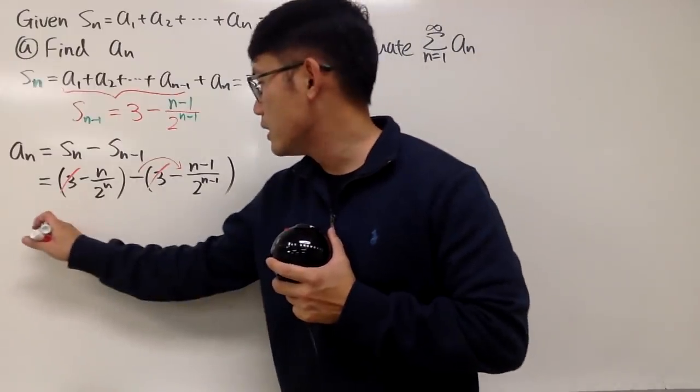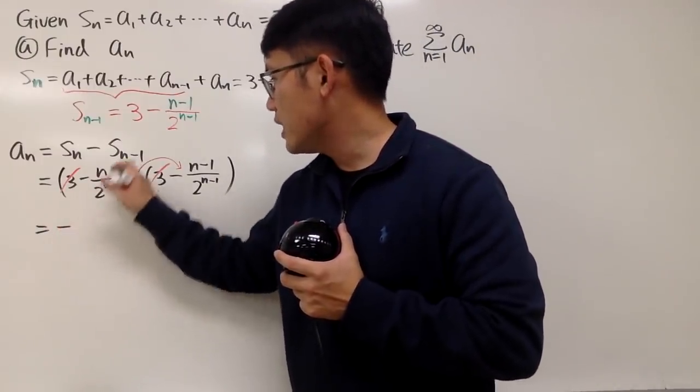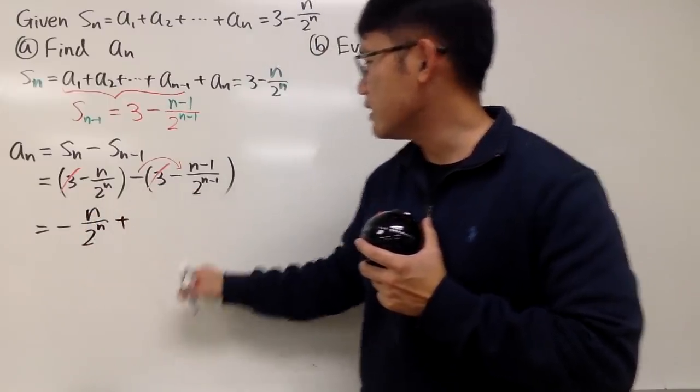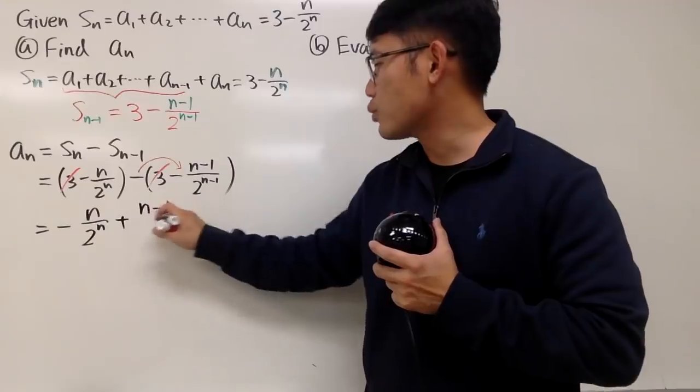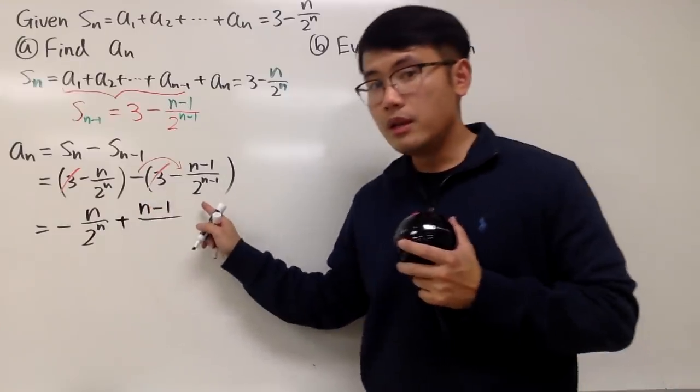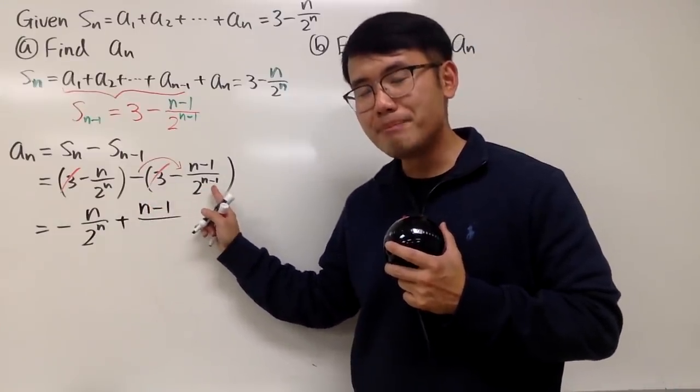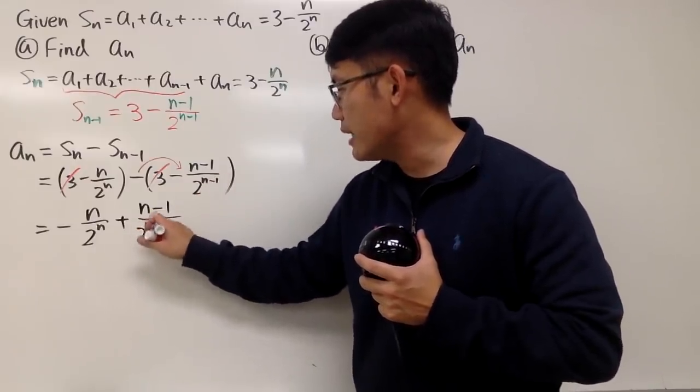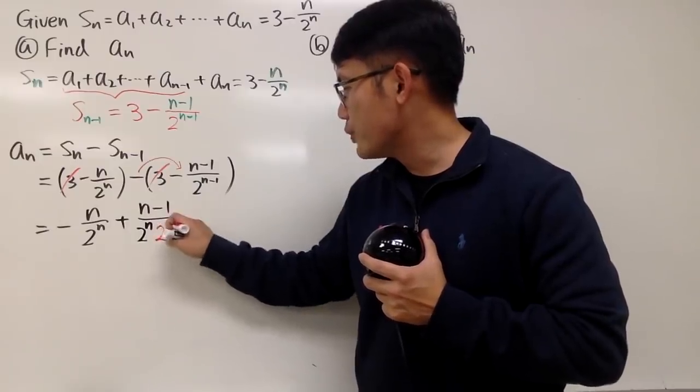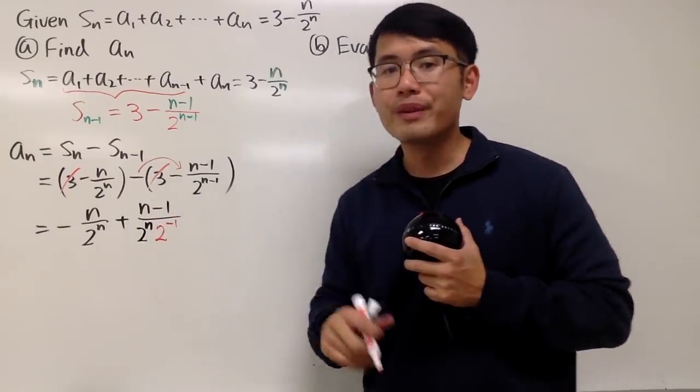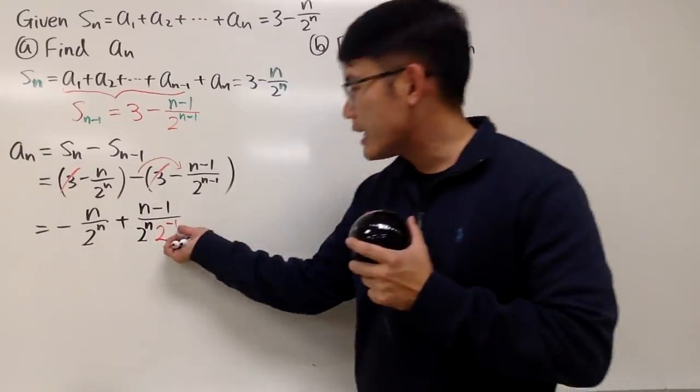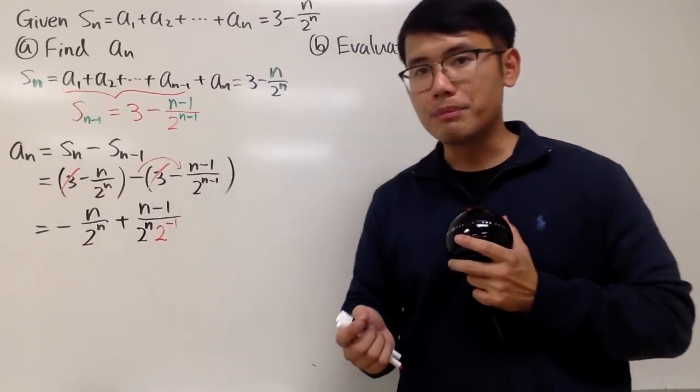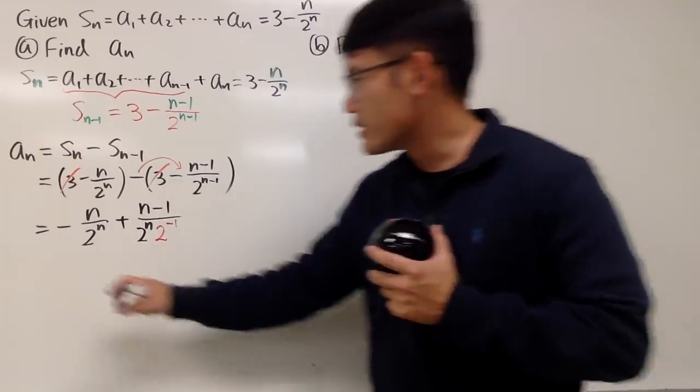And of course, we can do more algebra here. 3 and $-3$, this and that cancel. And then of course, don't forget to distribute the negative. And all in all, we'll see this is $-n/2^n$. Negative times negative becomes positive. And then here we have the $n-1$ over. Notice that we have $2^{n-1}$ power. Let me break the powers down like this. I will write this as $2^n$, and then we multiply it by $2^{-1}$ power.